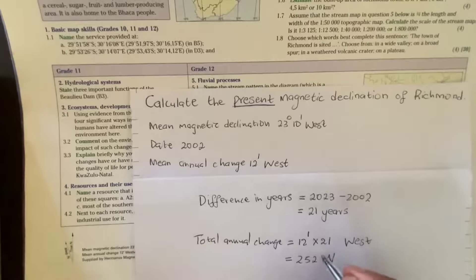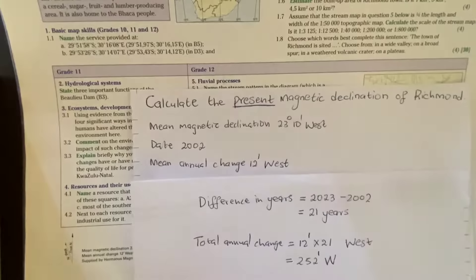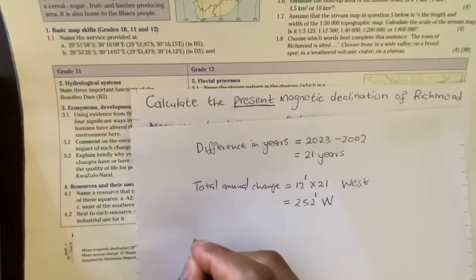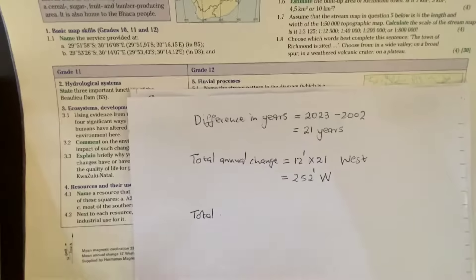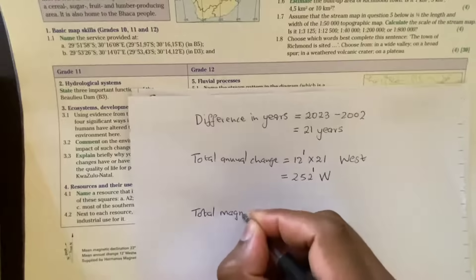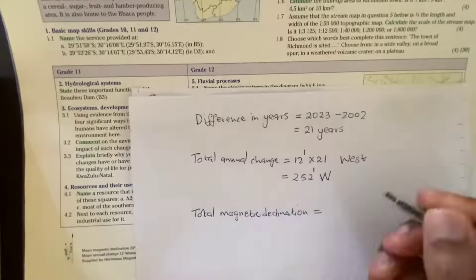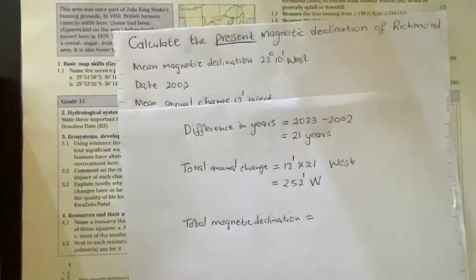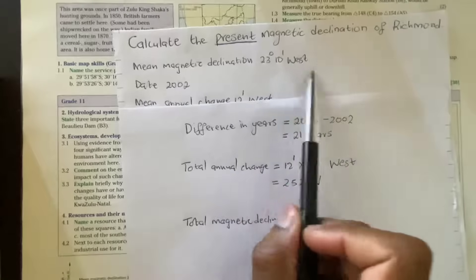Remember, this is in minutes — we're converting years into minutes, giving us our total annual change. Now we calculate the total magnetic declination. Write each step in your answer script so the examiner or teacher can follow when marking. The mean magnetic declination we are given is 23 degrees 10 minutes west.